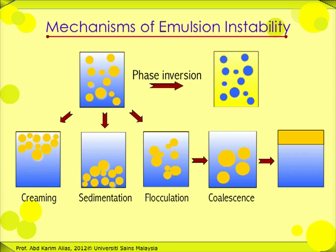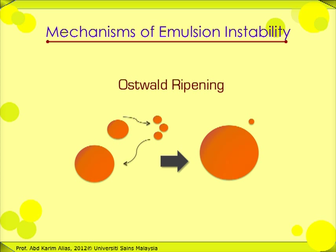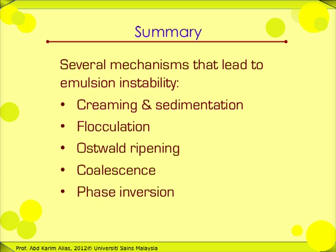Another phenomenon that leads to emulsion instability is known as Ostwald ripening. This phenomenon occurs in emulsions with polydispersed droplets. Collisions between two droplets may lead to one bigger droplet and one smaller droplet. As a result, small droplets become smaller, and eventually become very small and become solubilized in the continuous medium. Ostwald ripening is not very common in food systems because oil or fat are not normally soluble in water.